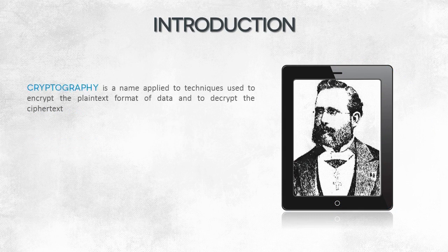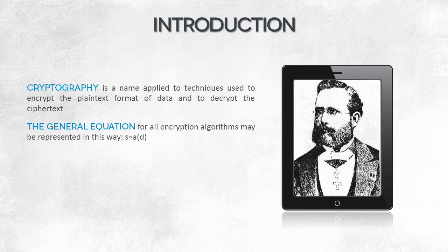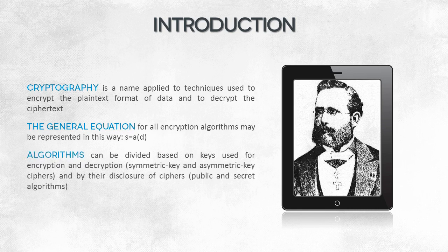Let's now briefly explain the terminology. The first term of note is cryptography — a set of techniques for encrypting and decrypting data. All algorithms for encryption, called ciphers, will operate following one very general formula: a ciphertext is a result of a transformation performed on a plain text. You can divide ciphers at several levels. The first division can be made based on what key or parameter is used by a specific algorithm. In this regard, ciphers can be classed as symmetric or asymmetric. We'll return to them later in the lecture.